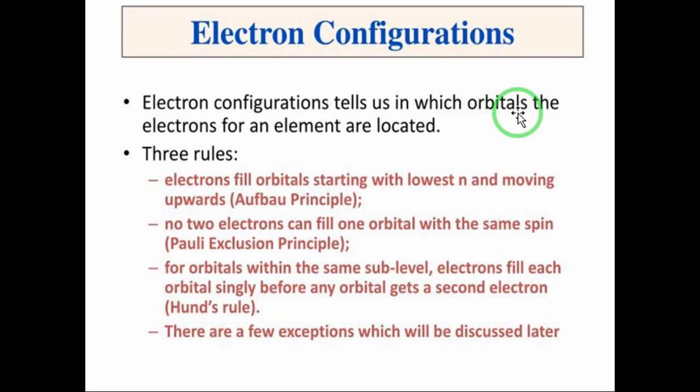In the last class I dealt with the 2n² rule, which says that in the first orbit there are 2 electrons, in the second orbit there are 8 electrons, in the third orbit there are 18 electrons, whereas in the fourth orbit there are 32 electrons.